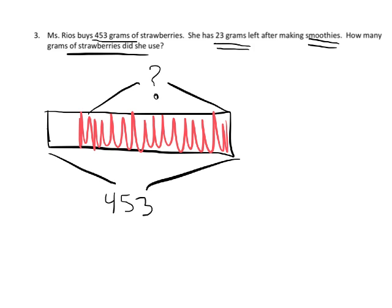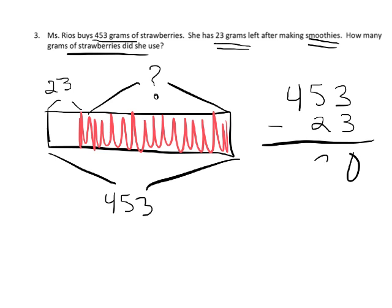But we sure do know that when she's done, she has 23 grams left over. Whenever the tape diagram looks like this, that generally means we're going to subtract. So our whole is 453 and our part is 23, and then we're going to subtract, and we get 430 grams.